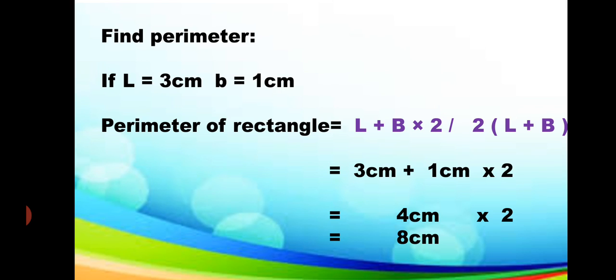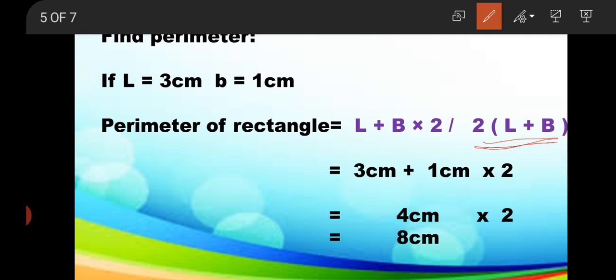Here we have the given length as 3 cm and breadth as 1 cm. To find the perimeter, we have the formula: length plus breadth, multiplied by 2. You can also write it as 2 × (length + breadth). Both forms are correct — you will not be confused.